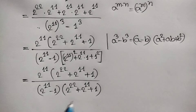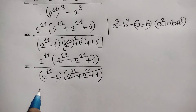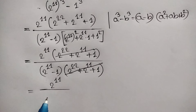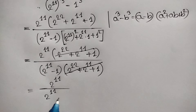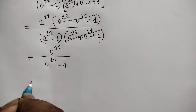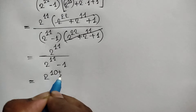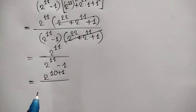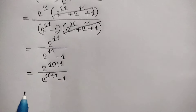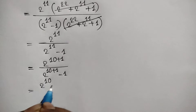The common factor (2 to the power 22 plus 2 to the power 11 plus 1) cancels out, leaving us with 2 to the power 11 over 2 to the power 11 minus 1. Now, 2 to the power 11 can be written as 2 to the power 10 plus 1, and similarly the denominator becomes 2 to the power 10 plus 1 minus 1.